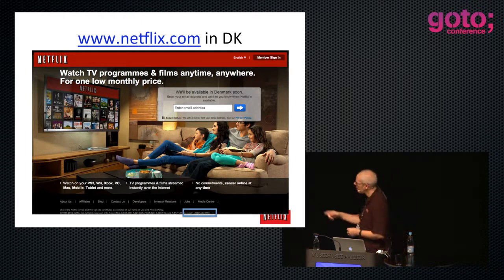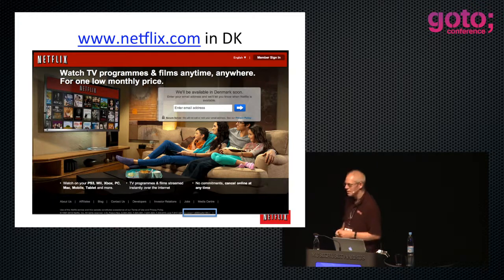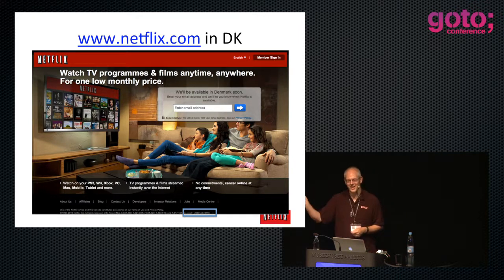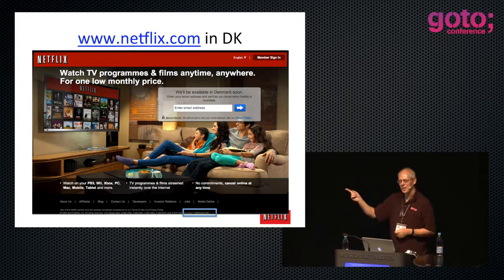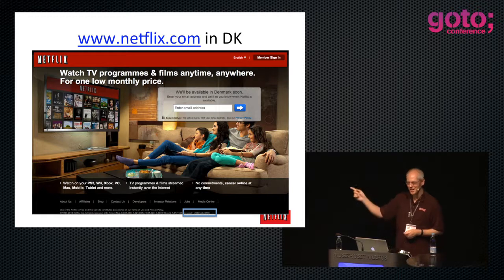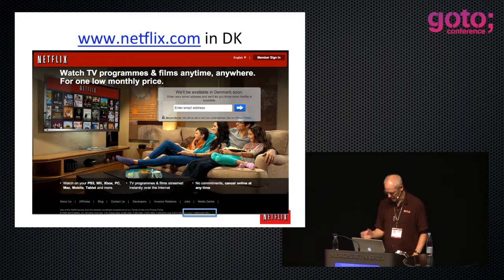At the bottom of the page there's something that says EU West 1, then a hexadecimal-looking thing, then DK. That hexadecimal thing, if you've ever used Amazon, is an instance ID. We render at the bottom of the page which machine sent it to you - so that is an Amazon Ireland EU West 1 machine.